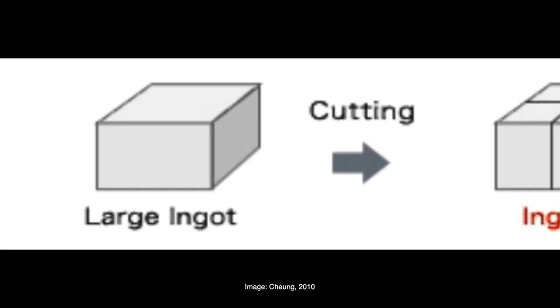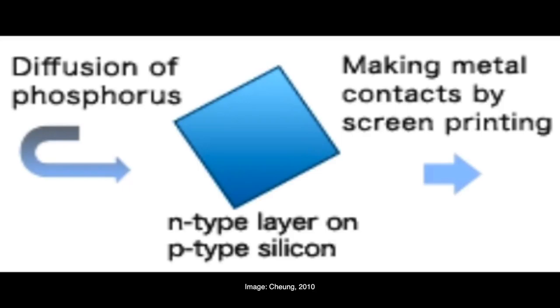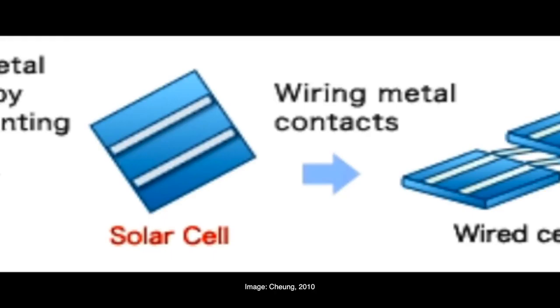Solar panels are made using the following process. Silicon is refined into large ingots. These are cut into smaller blocks, which are then sliced into wafers. After cleaning, diffusion takes place using phosphorus to form an n-type dopant layer on a p-type silicon wafer.